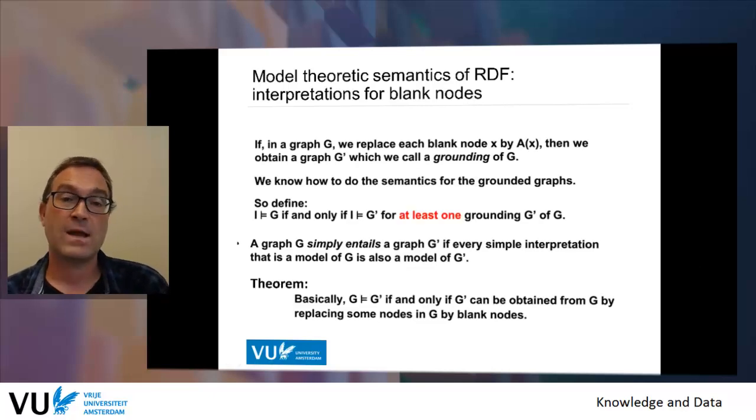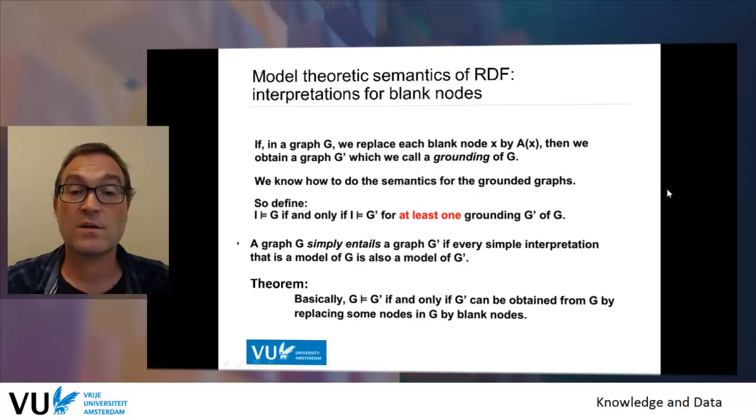So the graph simply entails a graph if every interpretation that is a model for the first graph is also a model of the second.